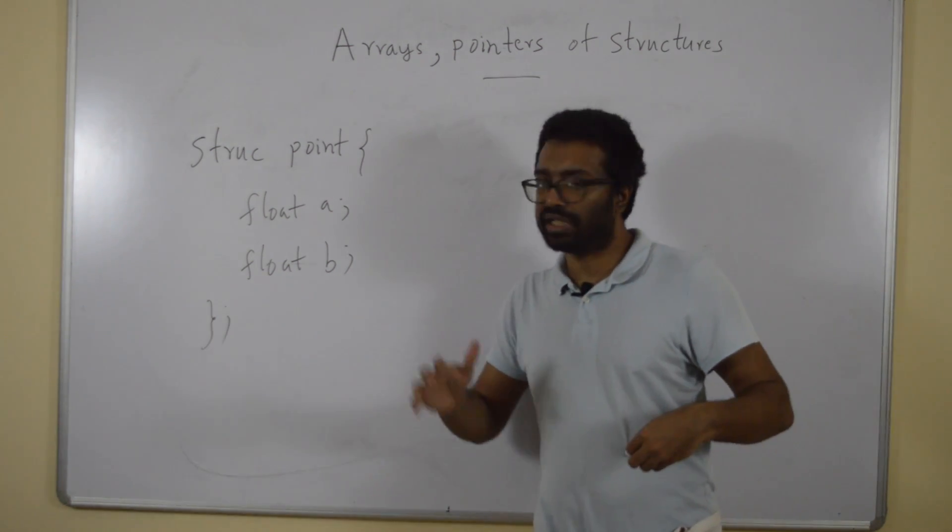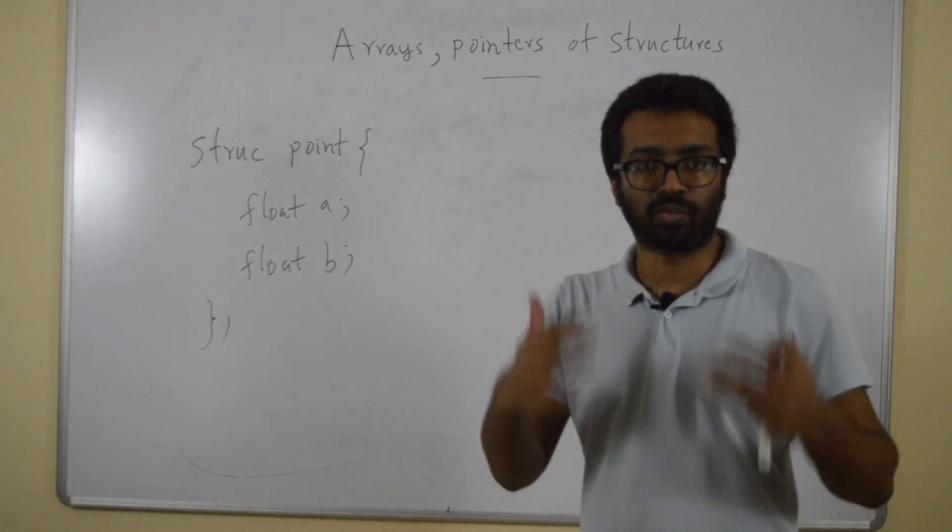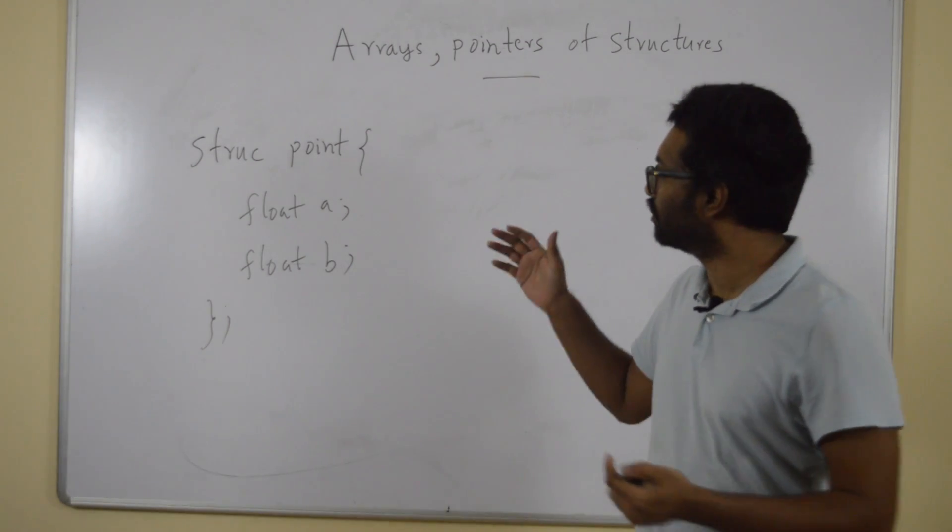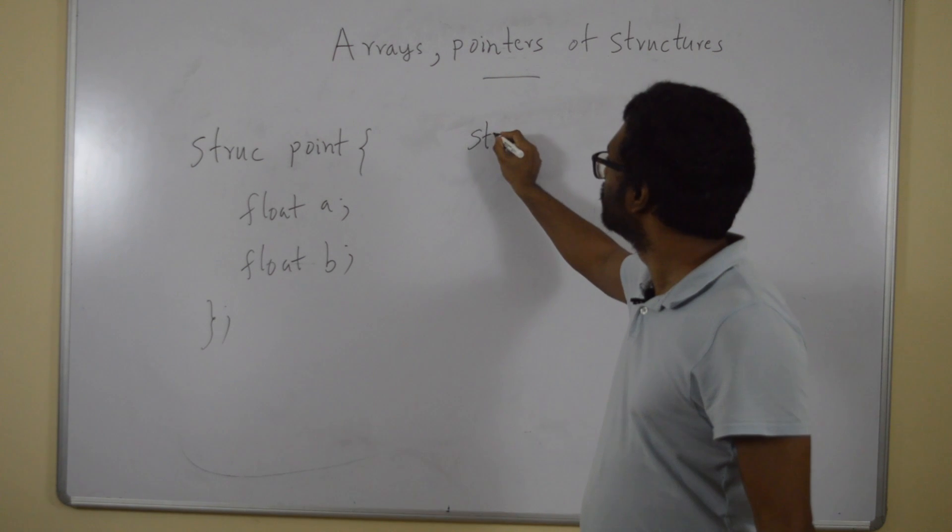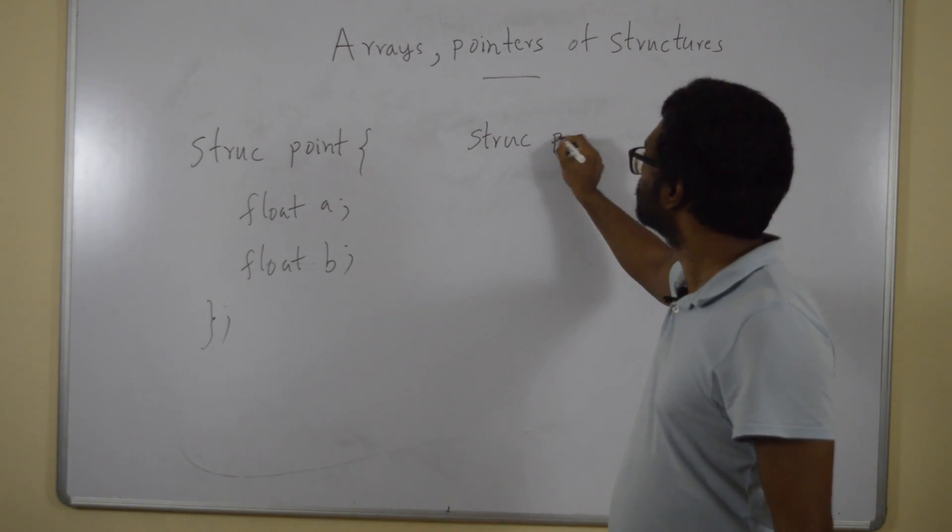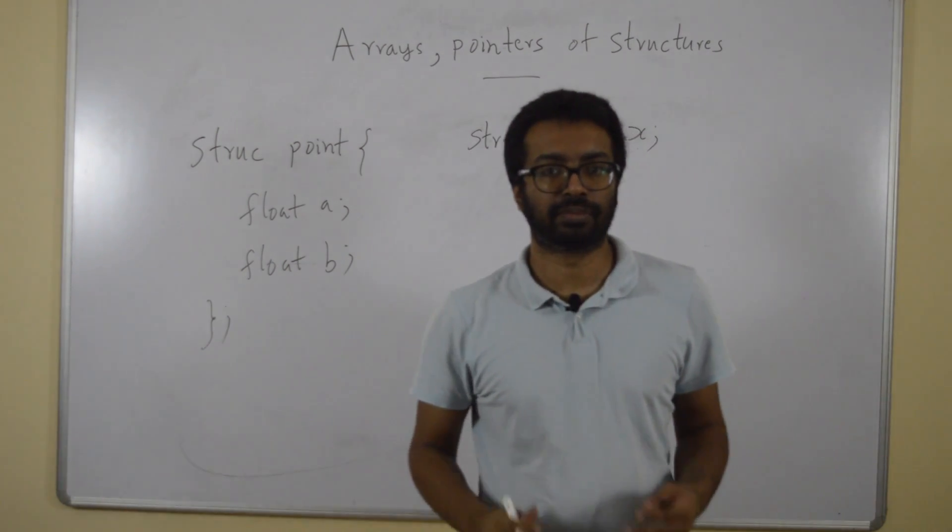Now, in this case, how do I create one variable for this structure? I should write struct point x.